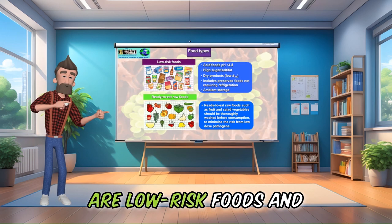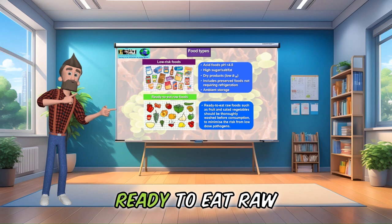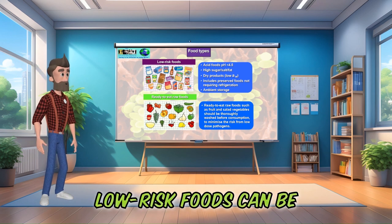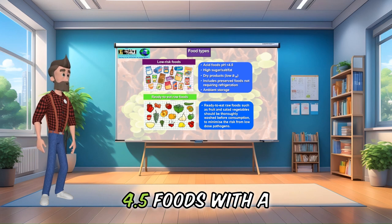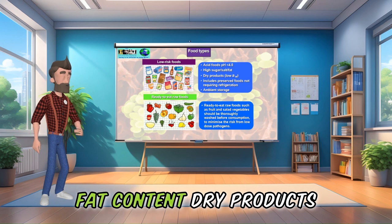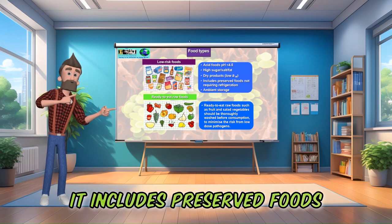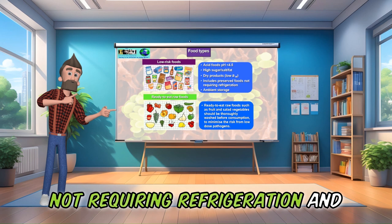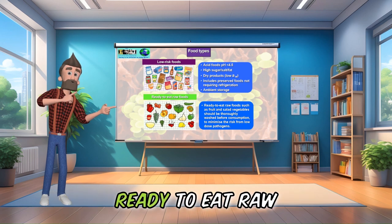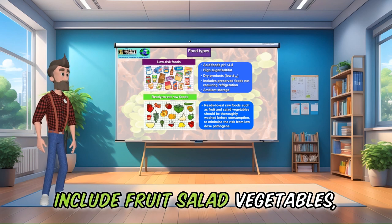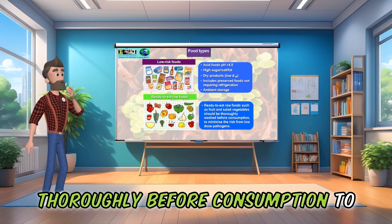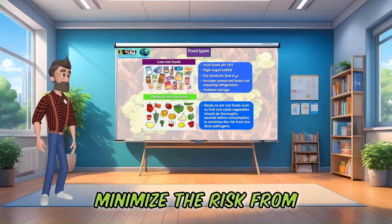The next two groups are low-risk foods and ready-to-eat raw foods. Low-risk foods can be acid foods with a pH of less than 4.5, foods with a high sugar, salt or fat content, and dry products. It includes preserved foods not requiring refrigeration and foods requiring ambient storage. Ready-to-eat raw foods include fruit and salad vegetables, which must be washed thoroughly before consumption to minimize the risk from low-dose pathogens.